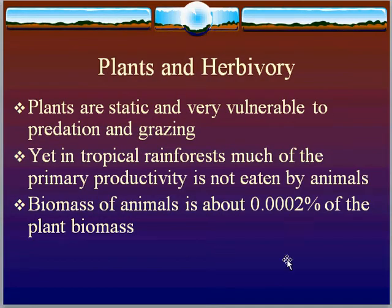Plants are static — they can't move or run away. That makes them easy to find and describe, so we have a pretty good idea of how many species there are. But it also makes them very vulnerable to predation and grazing. Animal predators or grazers can move around the forest looking for these plants, and the plants can't get away. Despite this, in tropical rainforests much of the primary productivity is not actually eaten by animals.